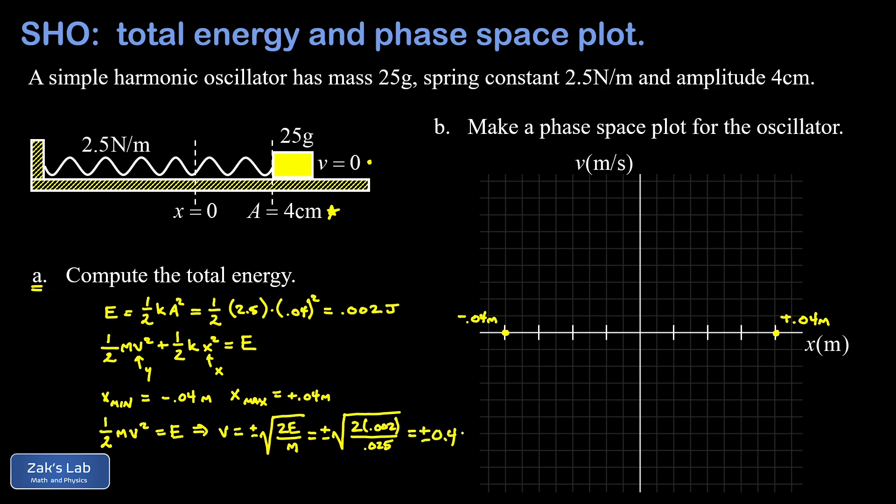That maximum value of velocity occurs when the oscillator is passing through the equilibrium position but moving to the right, and the negative one happens when the mass is passing through equilibrium but moving to the left.